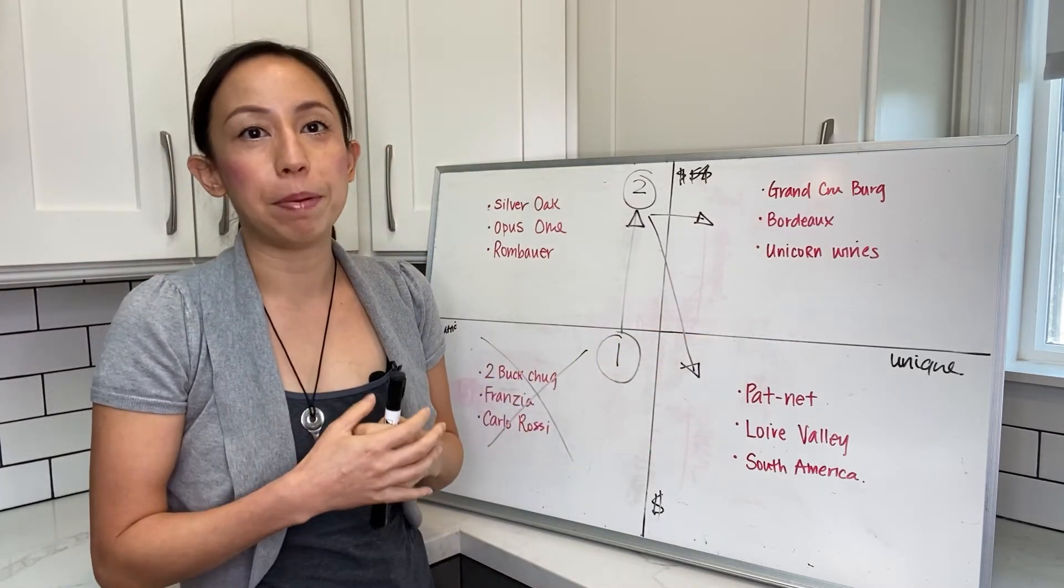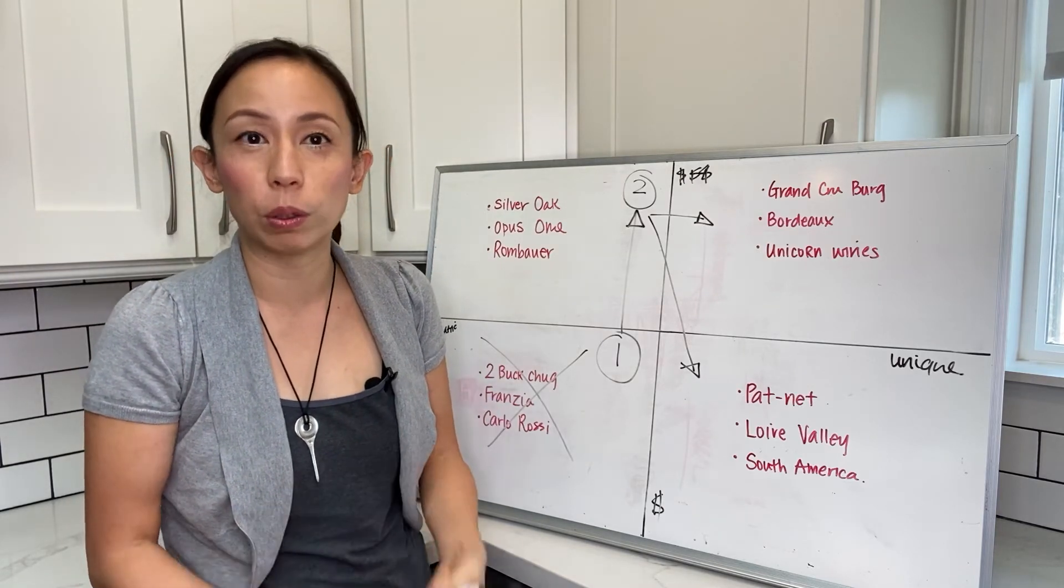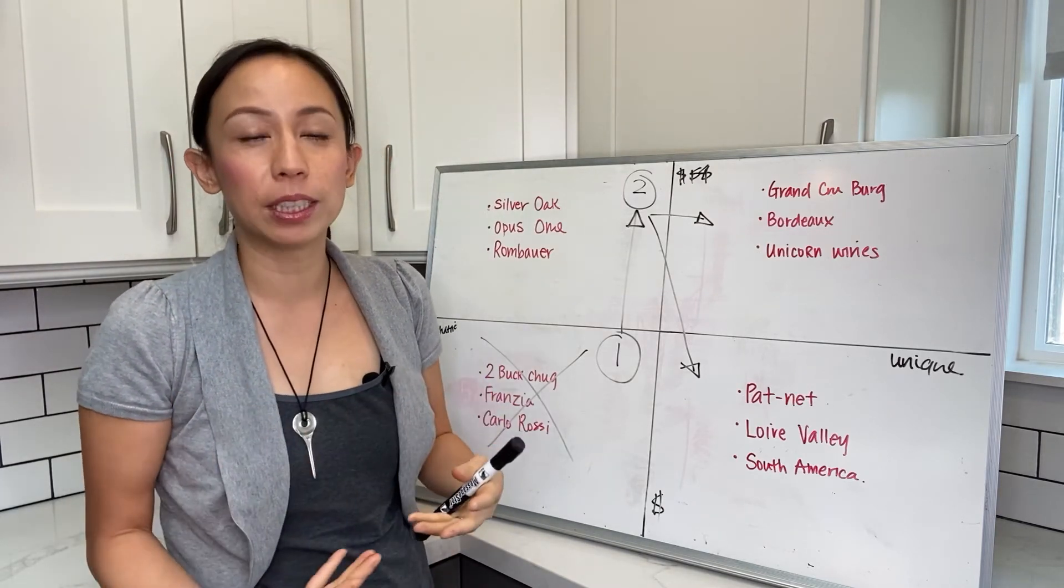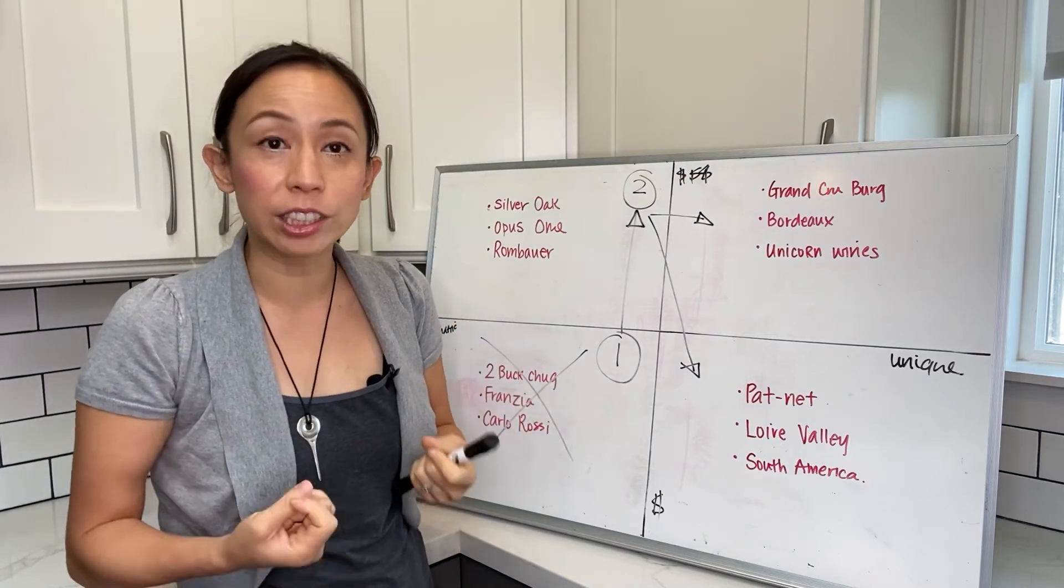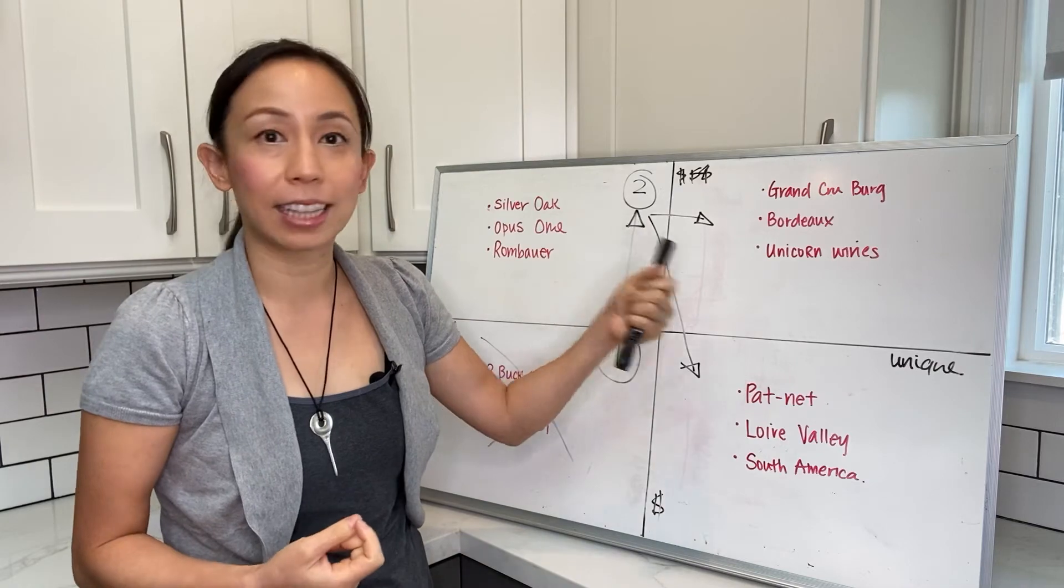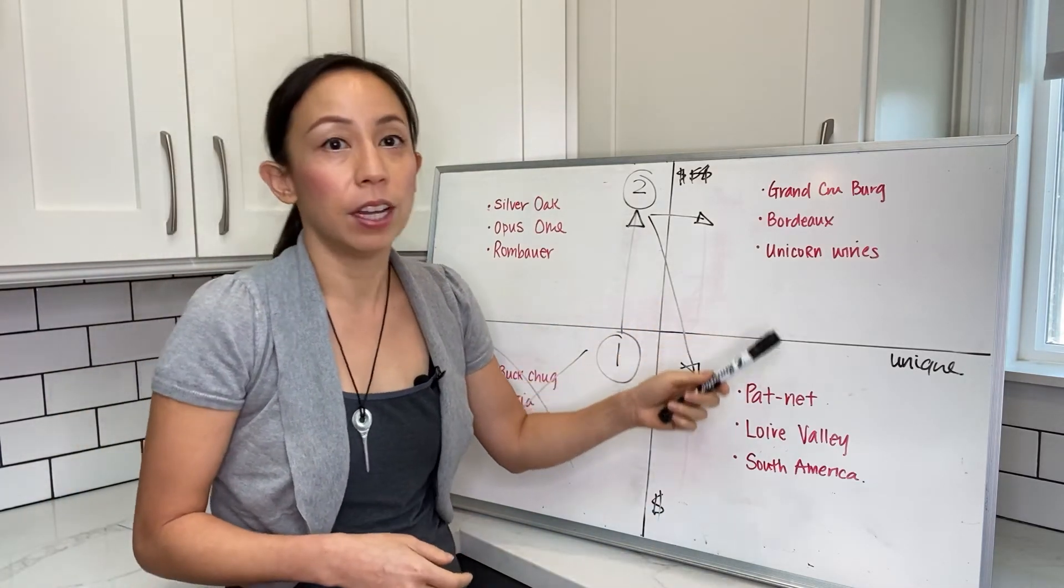Then we also have the unicorn wines—wines that might be made by very famous winemakers such as Henri Jayer, who's no longer with us. He's not producing any more wine, so any of the back vintage wines you can get your hands on, wines like that, it just shoots through the roof. So we're talking about very unique and very expensive.